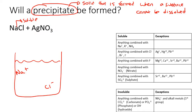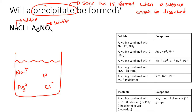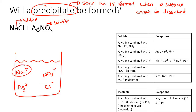Let's look at silver nitrate, AgNO3. Anything combined with NO3 is going to be soluble, so this will also be soluble. So we're going to have Ag⁺ and NO3⁻. NaCl was soluble so I separated them, and AgNO3 is soluble so I separated them too.